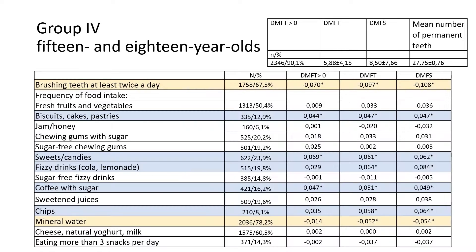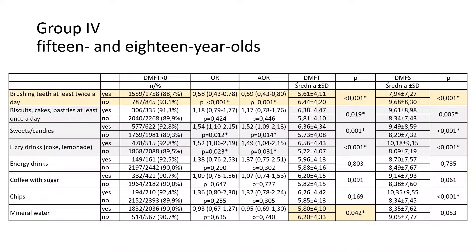The importance of sugar in the diet remains the same in teenagers, especially when it means frequent drinking of sweet drinks. As in other age groups, the negative impact of a sugar-rich diet is observed regardless of hygienic behaviors.